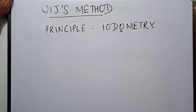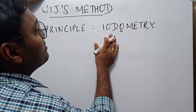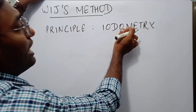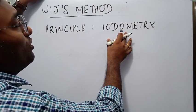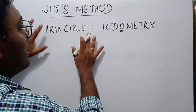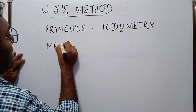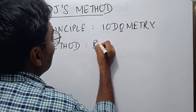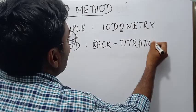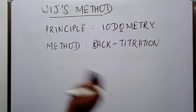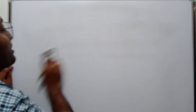Iodometry is the indirect estimation of iodine, whereas iodimetry is the direct estimation of iodine. Here we indirectly estimate iodine, so the method used is back titration. We will see in the method itself how we will indirectly determine the amount of iodine.